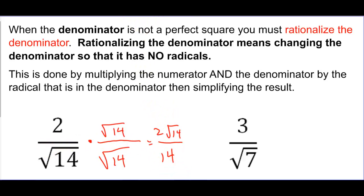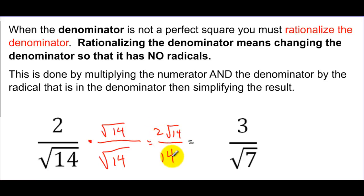Once I get that radical out, I take a look at my fraction — ignoring the square root of 14 on top for a moment, it looks like I have 2 over 14, and that can be simplified. If I divide top and bottom by 2, I get 1 over 7, so the final answer is square root of 14 over 7. This is my completely simplified radical.